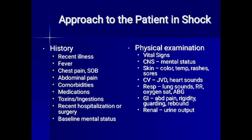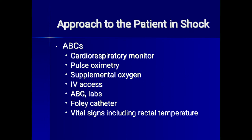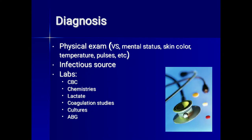The ABC approach includes cardiorespiratory monitoring, pulse oximetry, supplemental oxygen, IV access, arterial blood gases and labs, Foley catheter, and vital signs including rectal temperature. Lab studies should include CBC, electrolytes (sodium, potassium, chloride, bicarbonate, urea, creatinine, glucose), prothrombin time, APTT, arterial blood gases, and urinalysis. If there is an infectious source, search for it. Cultures and lactate levels are also important.